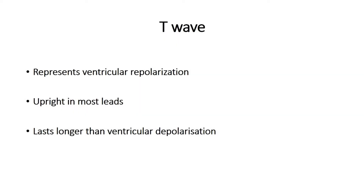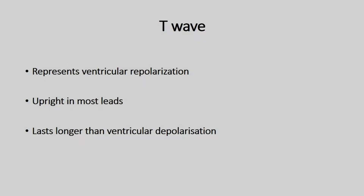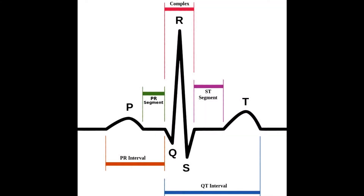In today's video we're going to talk about the T wave. The T wave in the ECG represents ventricular repolarization. It tends to be a lot slower than the QRS complex, which represents depolarization, so it tends to be broader than the QRS complex and is upright in most leads.